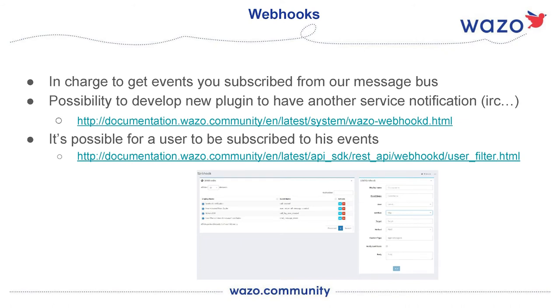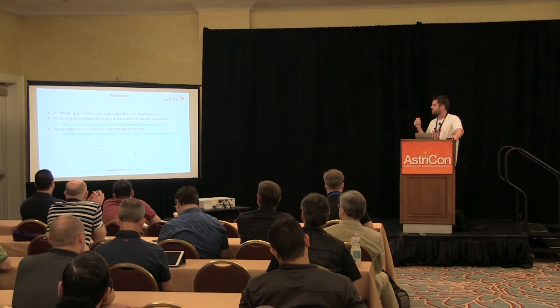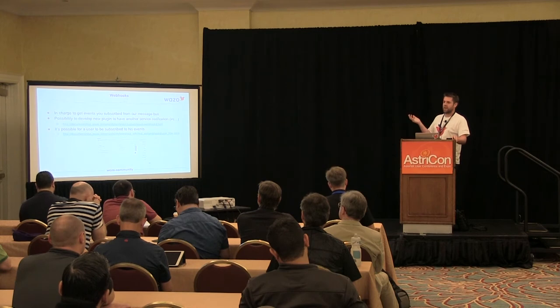The next interface is Webhooks. It's different because with REST API, an external program sends an HTTP request and you perform an action. But Webhooks is different: every event in WAZO is pushed to a message bus, and it's possible to subscribe to these messages and send an HTTP hook to an external application. So for example, if you receive a call, it's possible to send an HTTP request to — for example — create a new ticket in Zendesk.